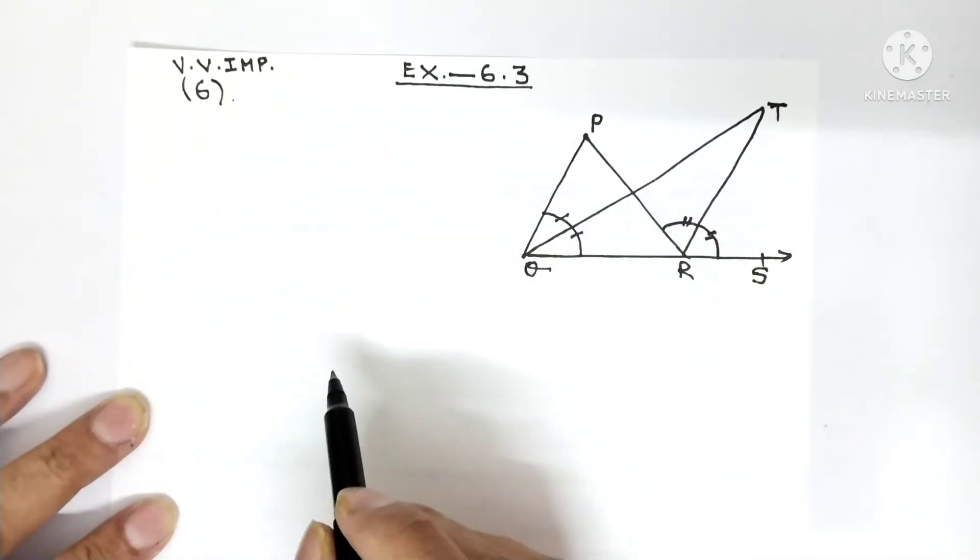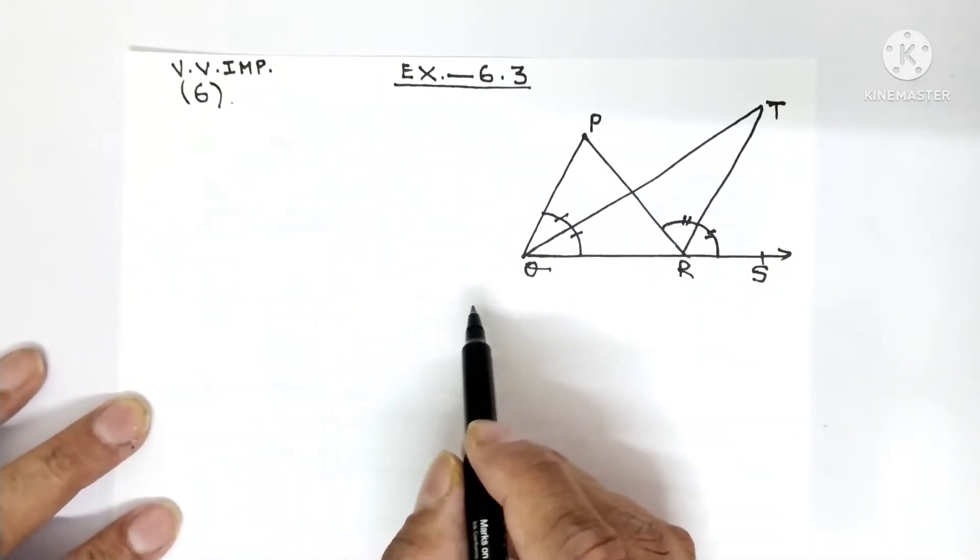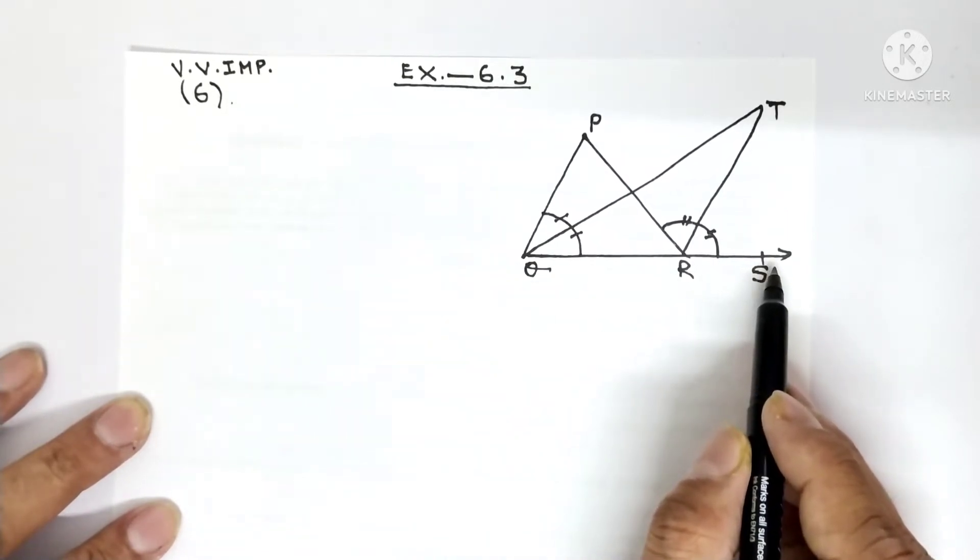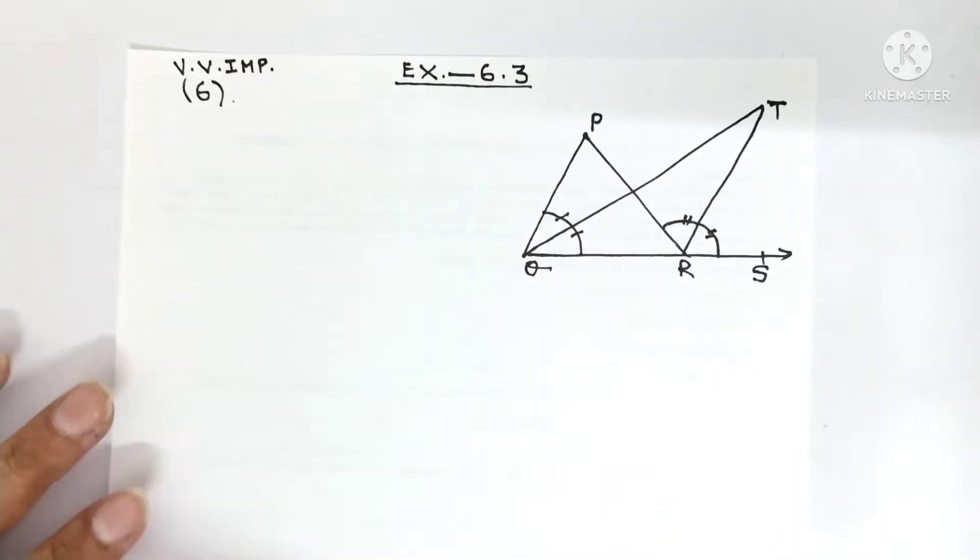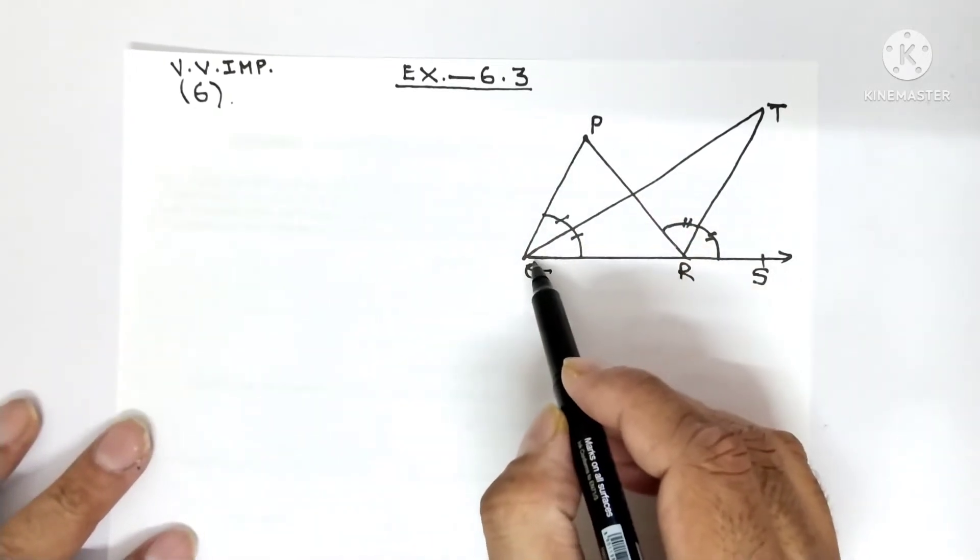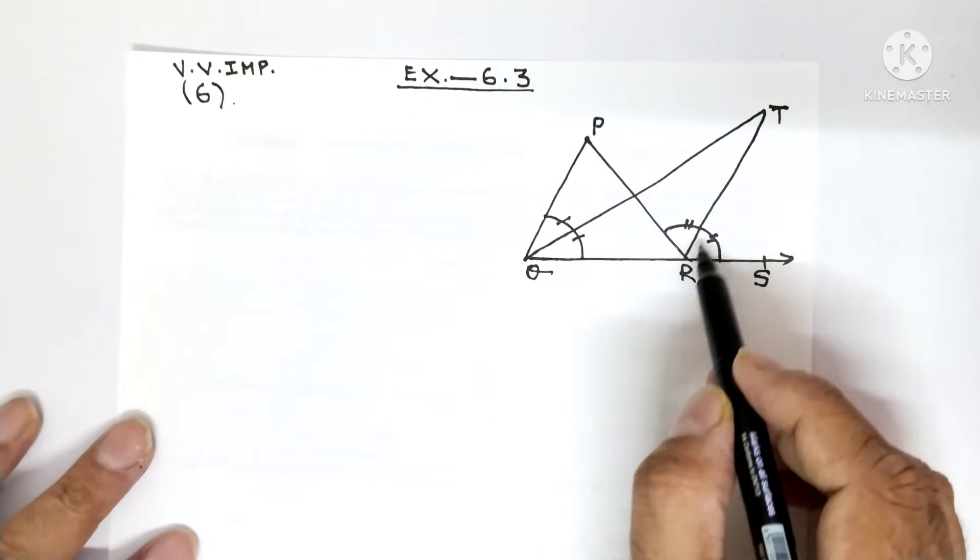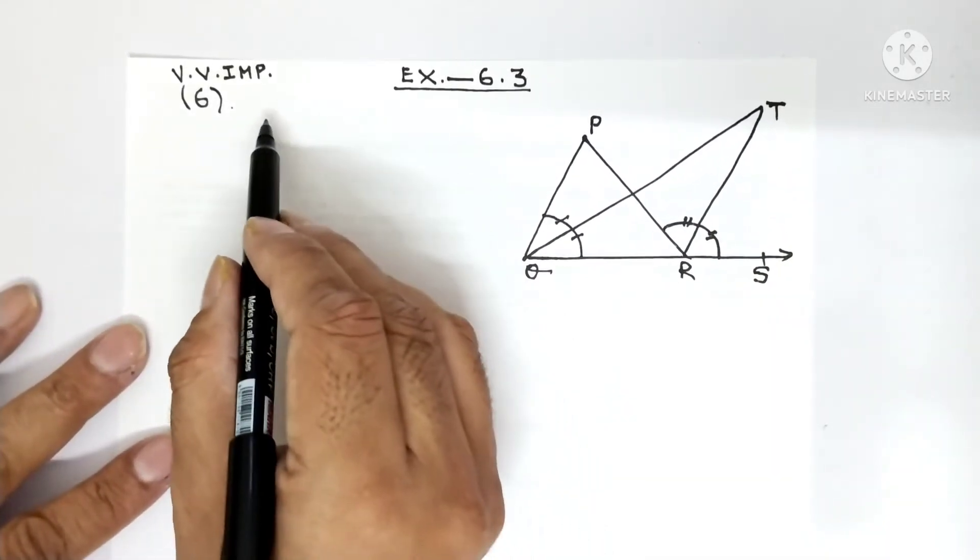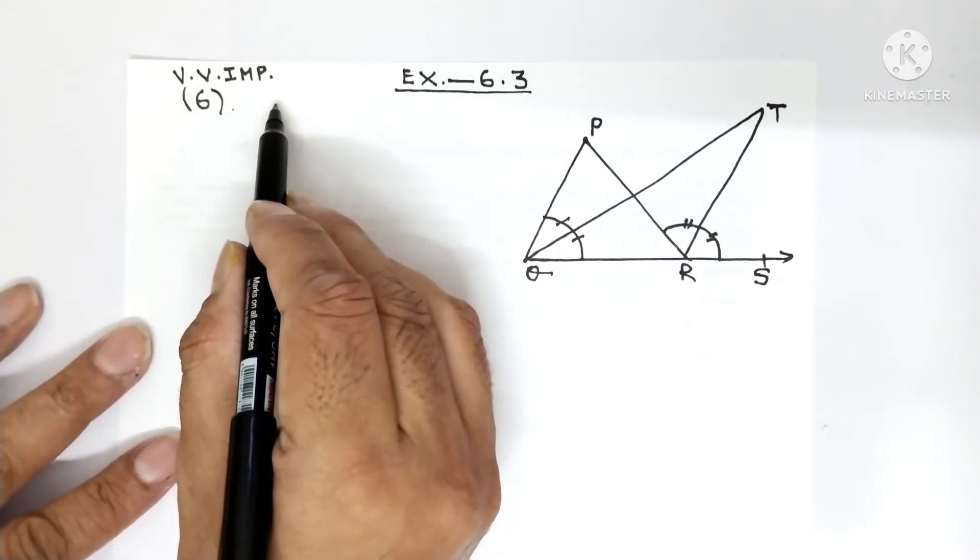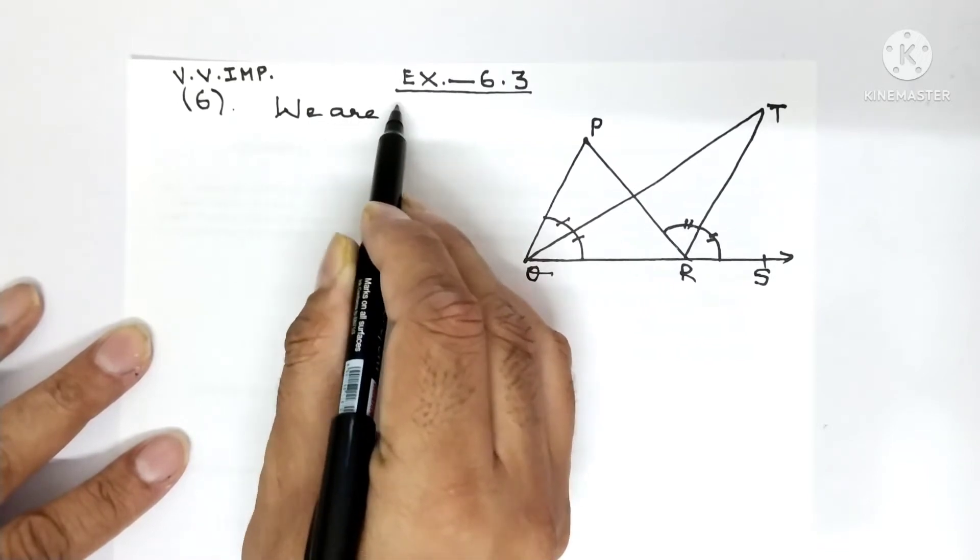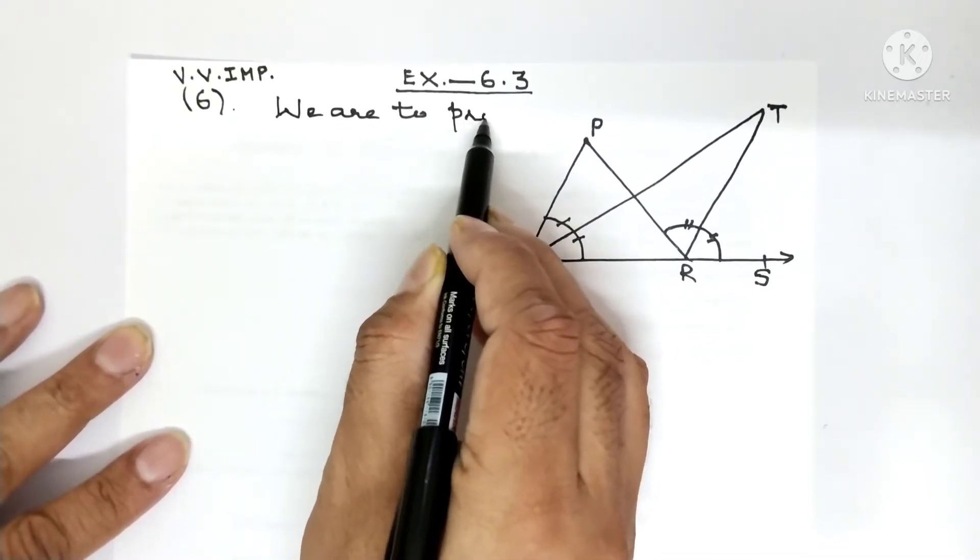Right, so the question says the side QR of triangle PQR is produced up to point S. If the bisectors of angle PQR and angle PRS meet at point T, then we are to prove that angle QTR is equal to half of angle QPR.